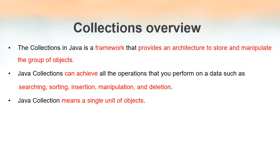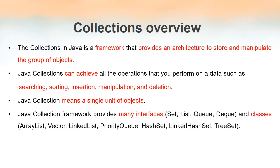We are collecting different objects into a single unit — that is what we mean by collections framework. It includes many interfaces and classes, so it is a group of interfaces and classes. Some of the interfaces in the collections framework are Set, List, Queue, and Deque. Some of the classes are ArrayList, Vector, LinkedList, PriorityQueue, etc. All these terms are related to data structures, so collections framework allows us to work with data structures in Java.